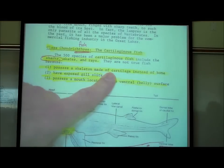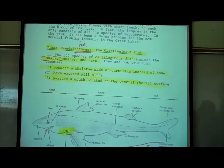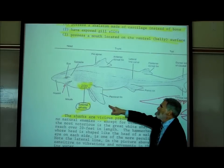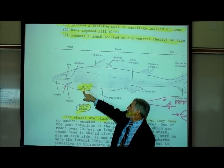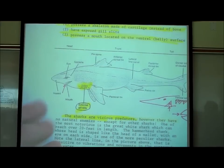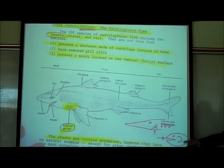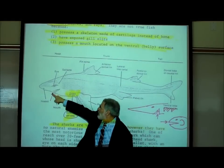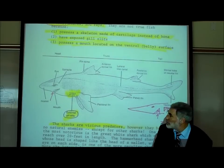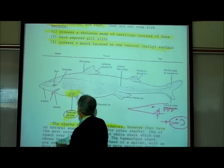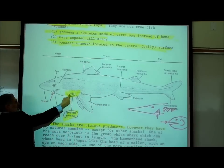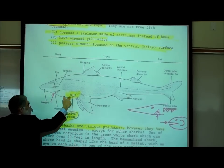Class Chondrichthyes includes the sharks, skates, and rays. They have a skeleton made of cartilage, not bone. They have exposed gill slits — when you see a picture of a shark, you can see the gill slits and they're exposed. The mouth is located on its ventral or belly side.